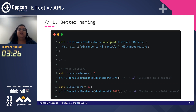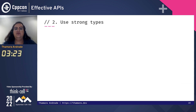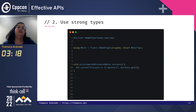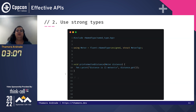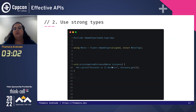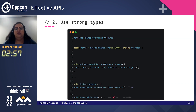Let's continue on this example with the second tip: use strong types. Strong types require the user of this API to explicitly create an object — a representation of that type. So by using, in this example, the named_type library, we can specifically say that we want a meter distance to be passed. If the user calls it with some other value, it won't compile — the best kind of error we can have.